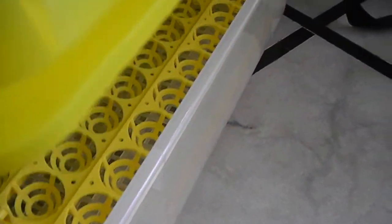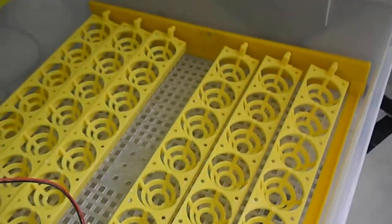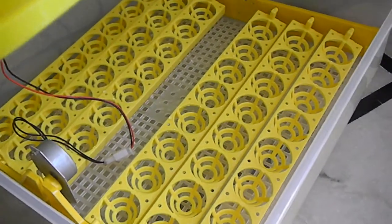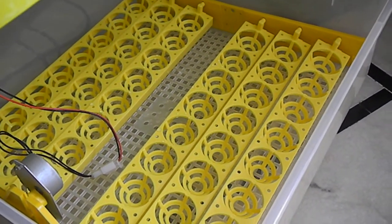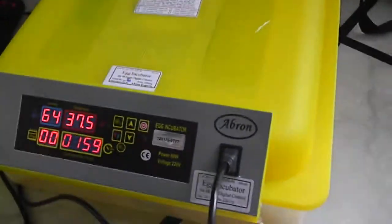This comes with an automatic system. It has 48-egg capacity. You can see these trays - there are 6 trays. Each can hold eggs and it has a motor. All these things are automatic. No need to test it.